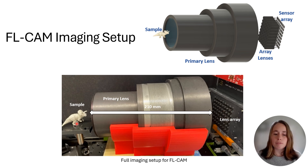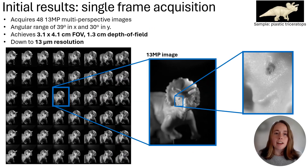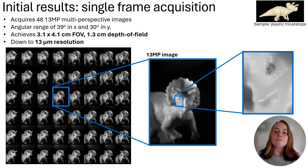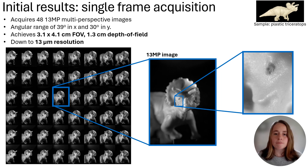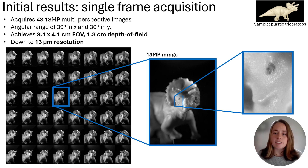In this way, we're able to image our sample. This is a single snapshot of the triceratops from that system. As you can see, we are able to acquire high resolution images of this 3x4 cm object from 48 unique perspectives. Now, we can take these images and computationally reconstruct a 3D rendering of the object.